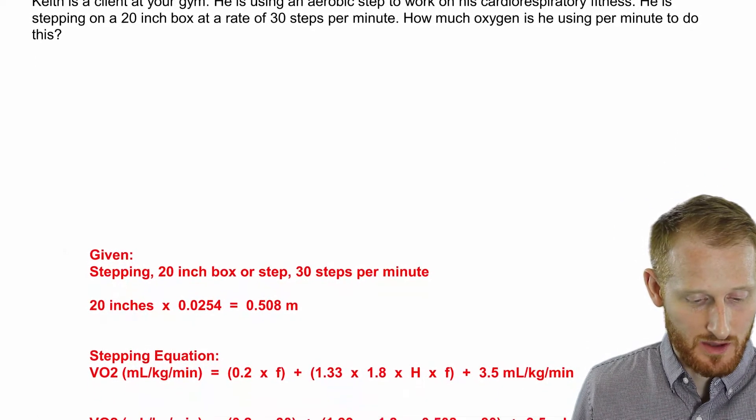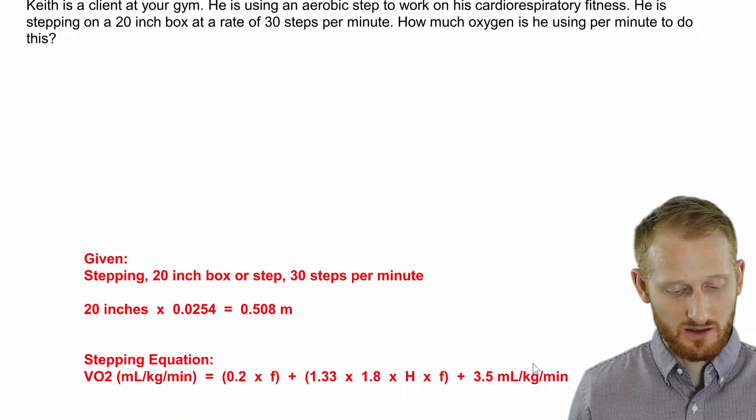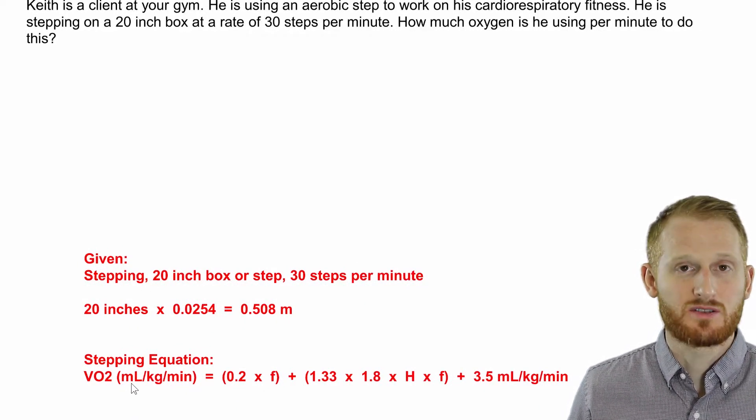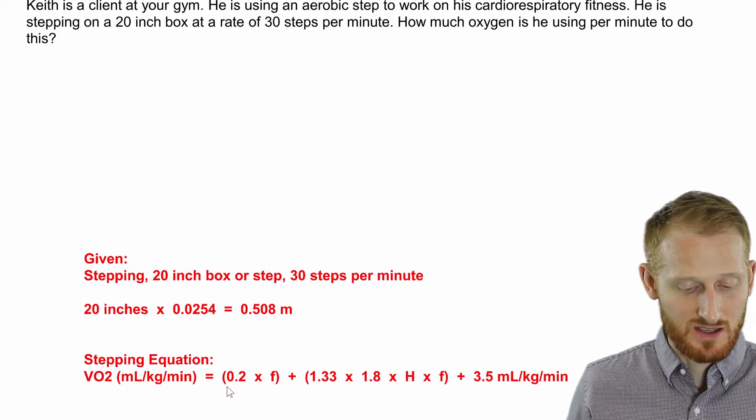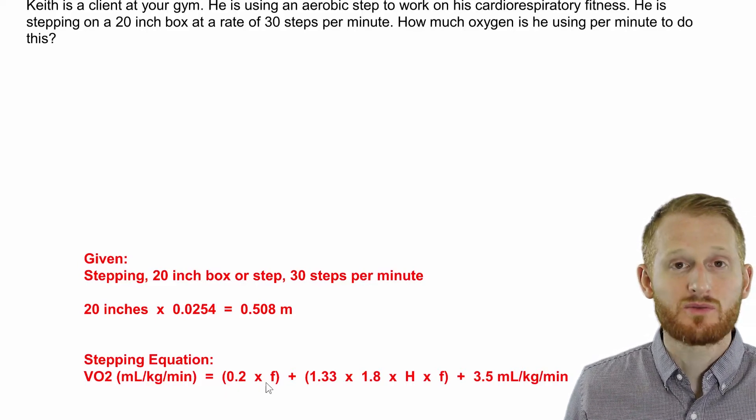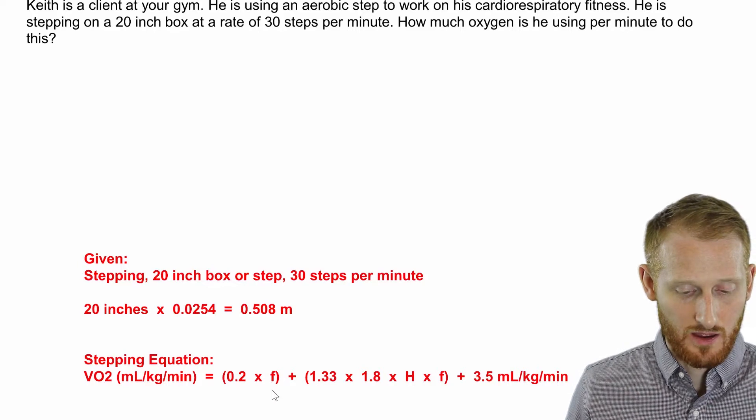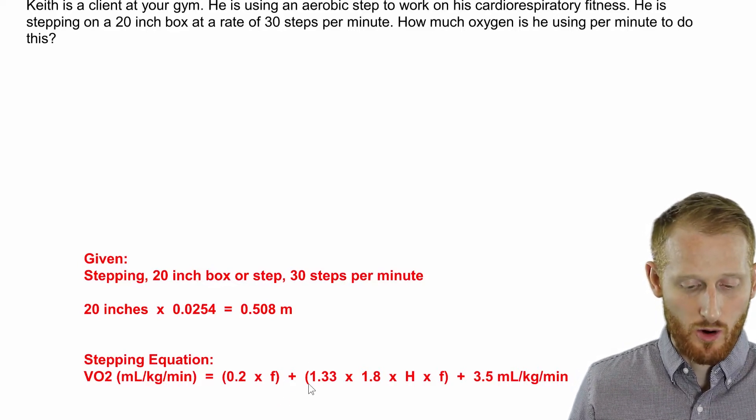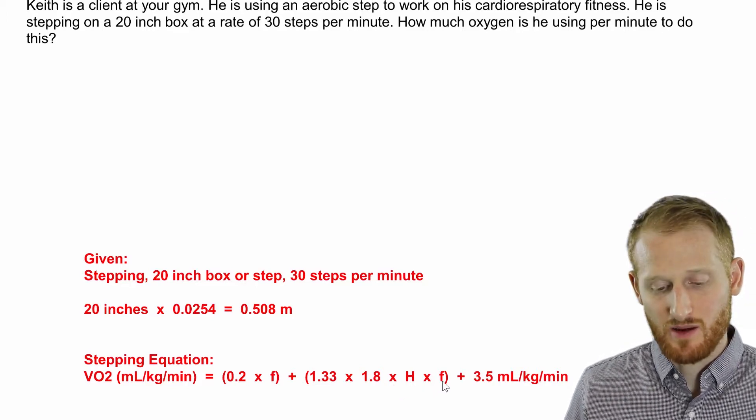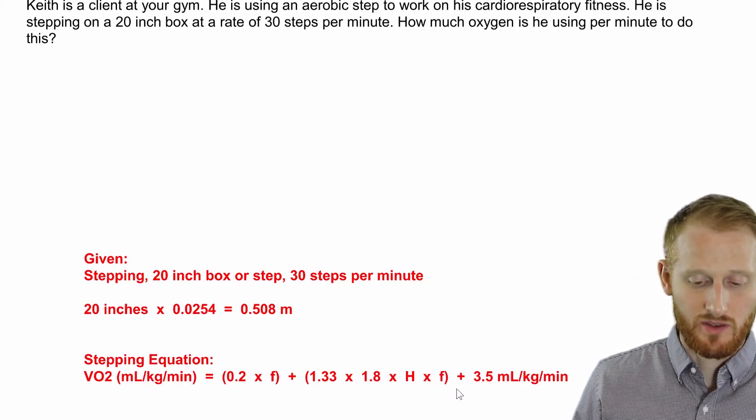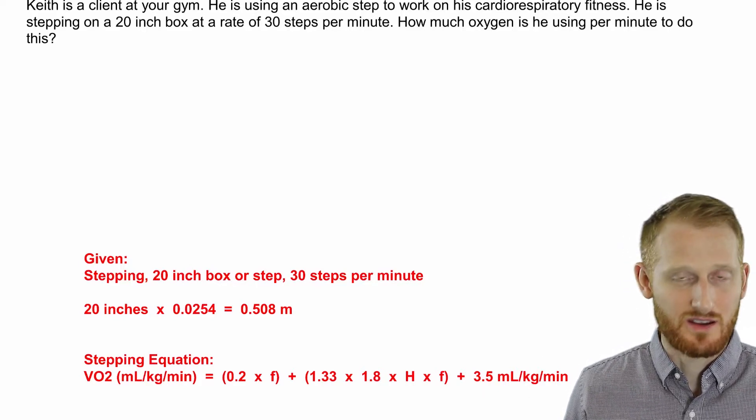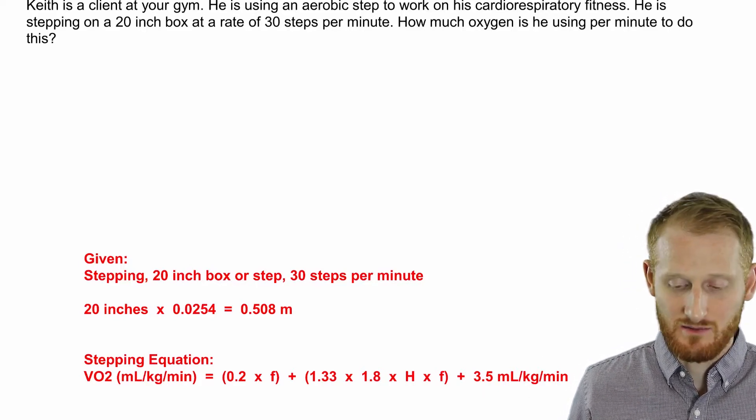The stepping equation is VO2 in relative terms, so milliliters of oxygen per kilogram body mass per minute equals open parentheses 0.2 times the frequency of the stepping, so F, close parentheses plus open parentheses 1.33 times 1.8 times the height of the step times the frequency of the step close parentheses plus 3.5. This 3.5 is the resting component of the activity.